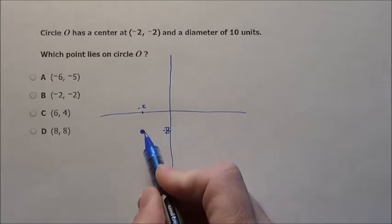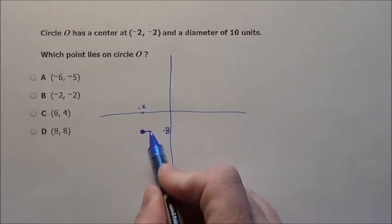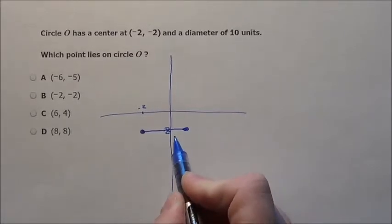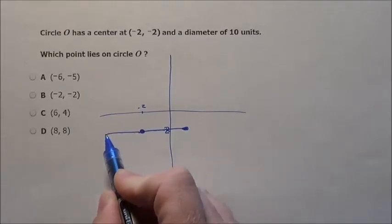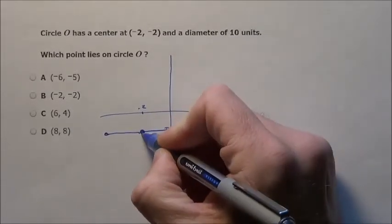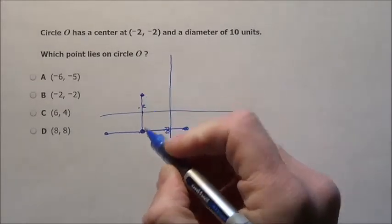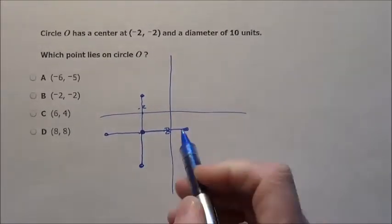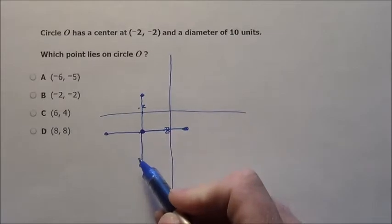So if you are here at negative 2, negative 2, you have a point sitting out here 5 units away. You have another point to the left 5 units away. You have a point right up here 5 units above and another one 5 down here. You could connect them and there would be your circle.